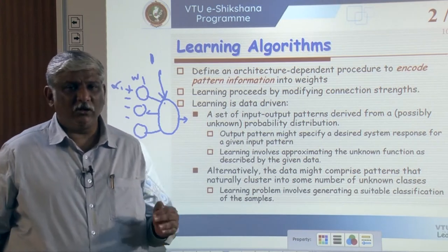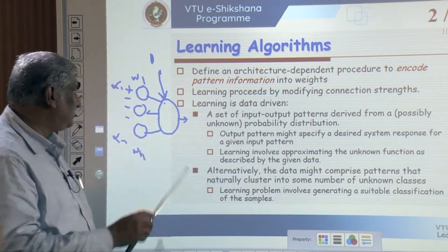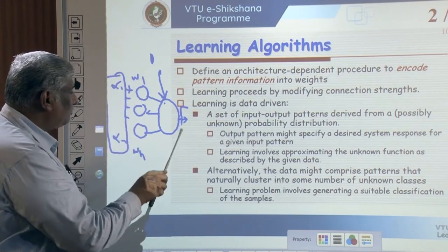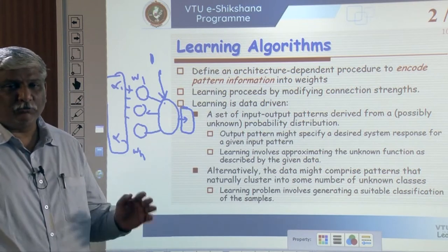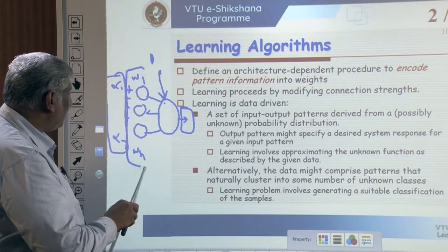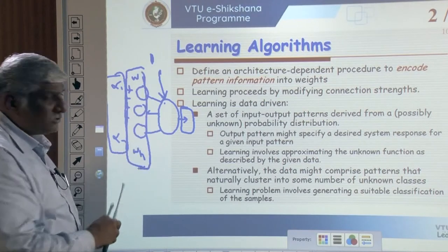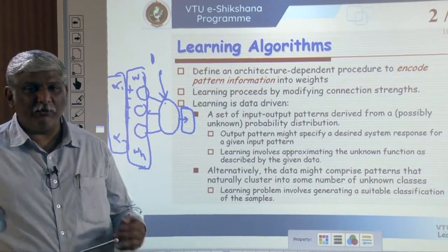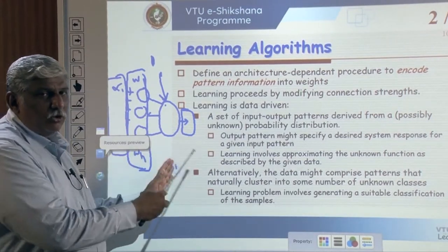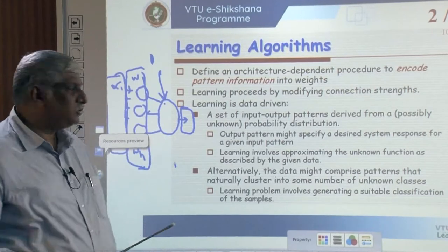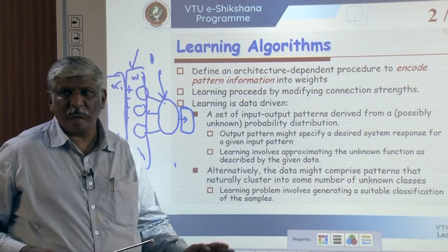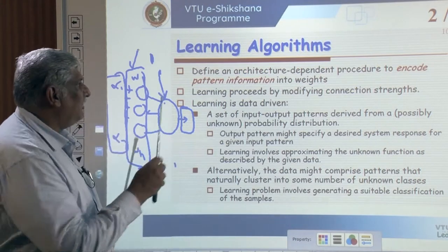In the learning algorithm, X is the input which we cannot change, and Y is the desired output which we also cannot change. To make the network work correctly, we have to continuously adjust the weights W, so that for any input we can get the desired output. The process of updating these weights is basically the learning algorithm.